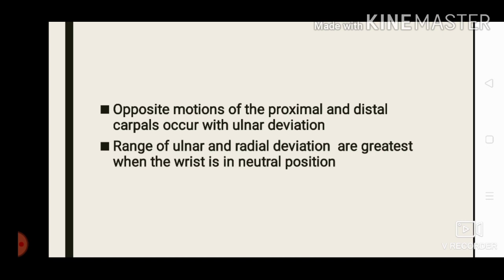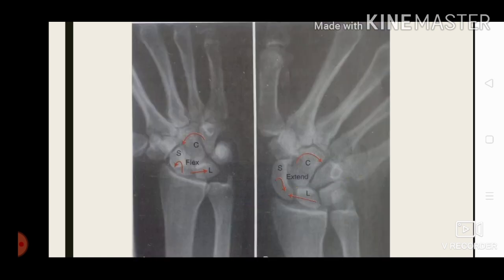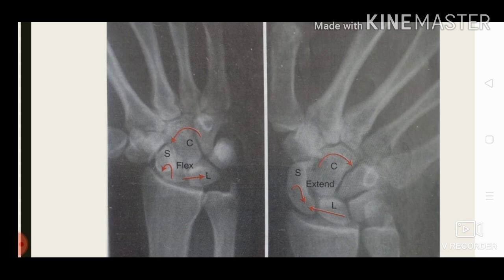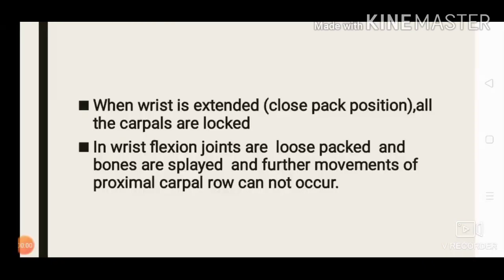The range of ulnar and radial deviation is greatest when the wrist is placed in neutral position. In radial deviation, carpals slide ulnarly with flexion of the proximal carpals and extension of the distal carpals. When the wrist is extended — in close-packed position — all carpals are locked and further movement is not possible. In wrist flexion, joints are loose-packed and the bones are spread, preventing further movement of the proximal carpal row. Therefore, maximum range of radial and ulnar deviation occurs with the wrist in neutral position.